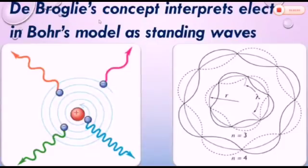De Broglie's concept interprets electron in Bohr's model as standing waves. De Broglie realized that the electrons orbiting the nucleus is considered as a circular standing wave that consists of an integral number of wavelengths fitting exactly within the orbit.